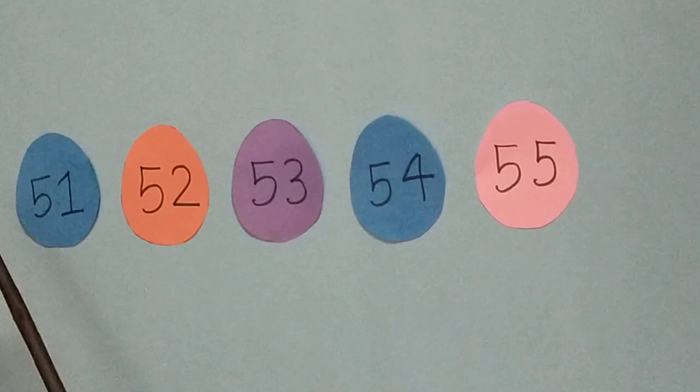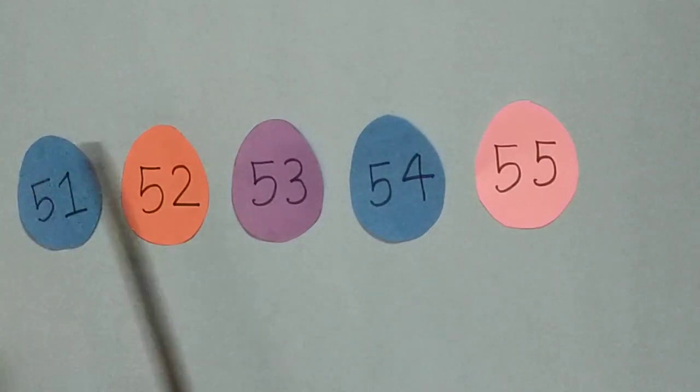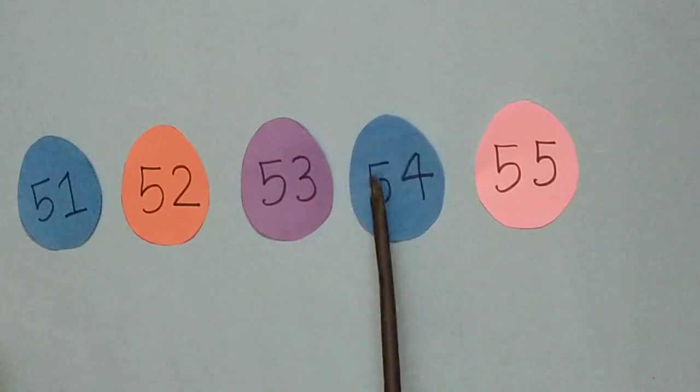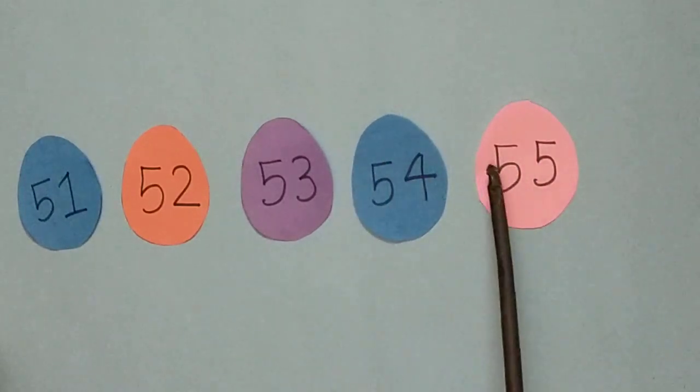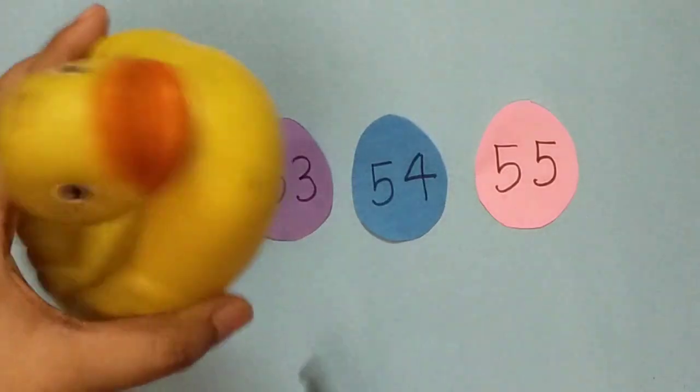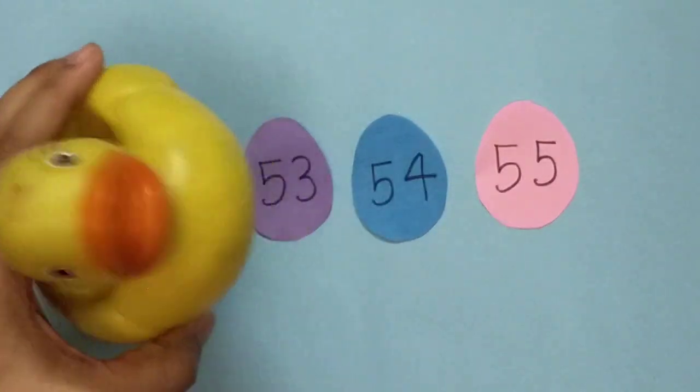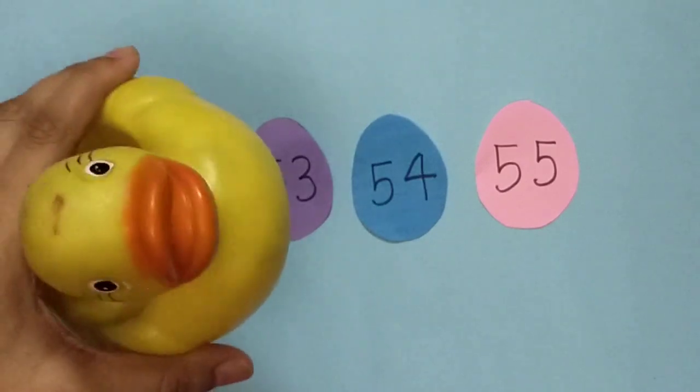Now say the numbers. Fifty-one, fifty-two, fifty-three, fifty-four, and then fifty-five. Look, ducky is very happy to learn math from you, isn't it? Okay, ducky says thank you.